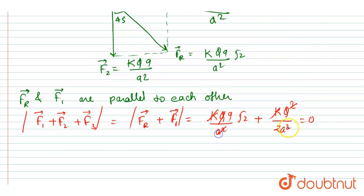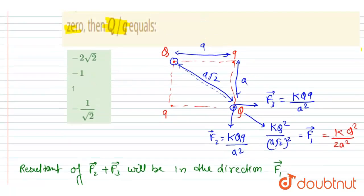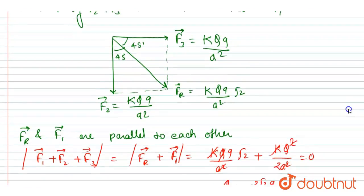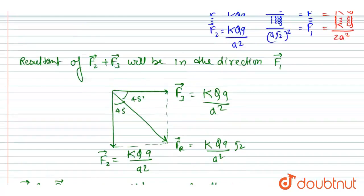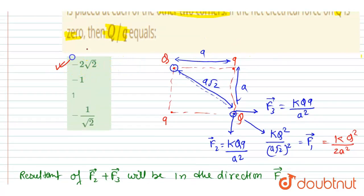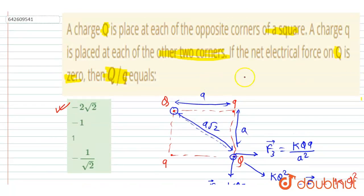Solving, we get Q = -2√2 q. Since the question asks for the Q/q ratio, the answer is -2√2. The correct option is A.